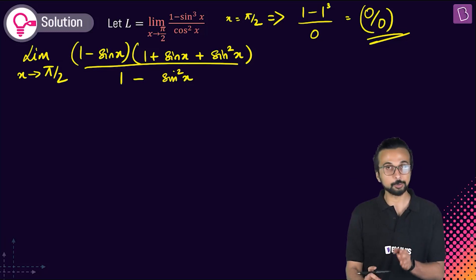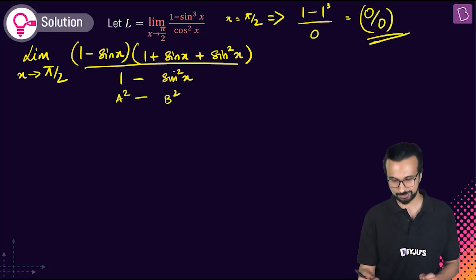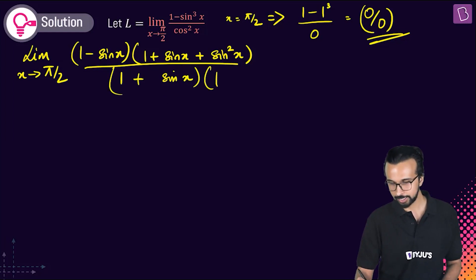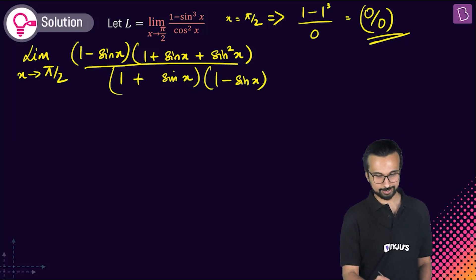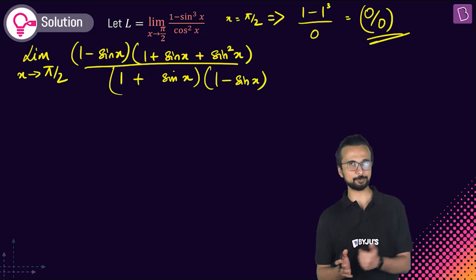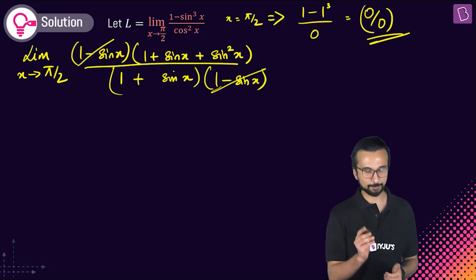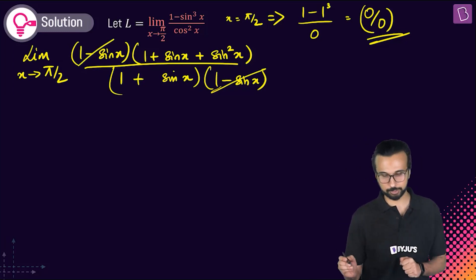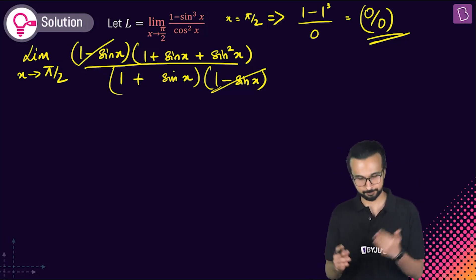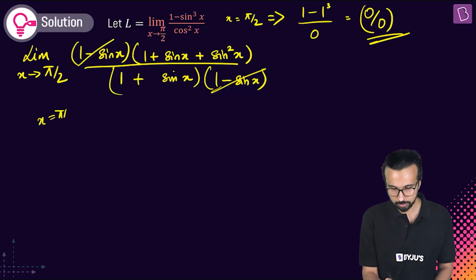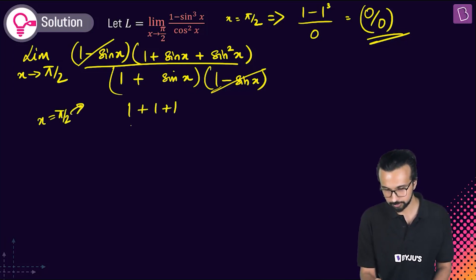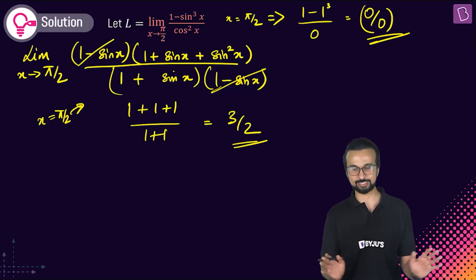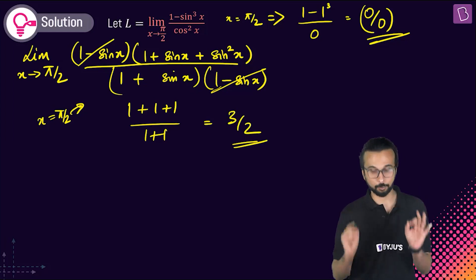The denominator (1 - sin²x) factors as (1 - sin x)(1 + sin x). The numerator also has (1 - sin x), so we cancel it. After cancellation, we substitute x = π/2: numerator gives 1 + 1 + 1 = 3, denominator gives 1 + 1 = 2. Result: 3/2.